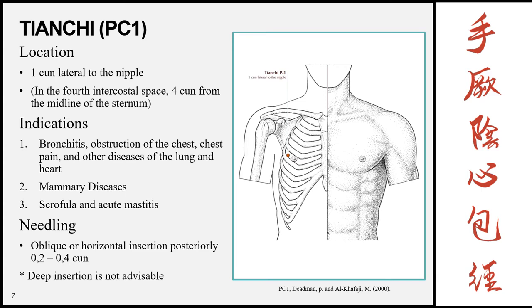The first point is Tianchi, pericardium 1. This point is located 1 cun lateral to the nipple in the 4th intercostal space. The nipple is 4 cun lateral to the midline, so this point is 5 cun lateral to the midline. Indications include bronchitis, obstruction of the chest, chest pain, and other diseases of the lung and heart. It can also be used for mammary diseases due to its location, and for scrofula and acute mastitis. Needling is oblique or horizontal insertion posteriorly — towards the back of the body. Deep insertion is not advised as this could puncture the lungs.